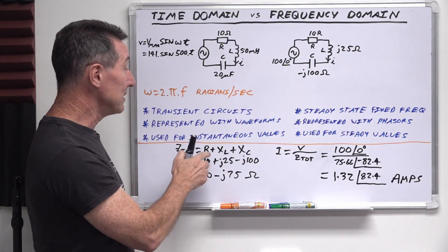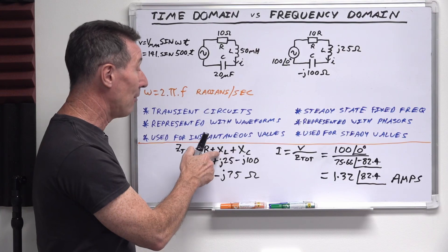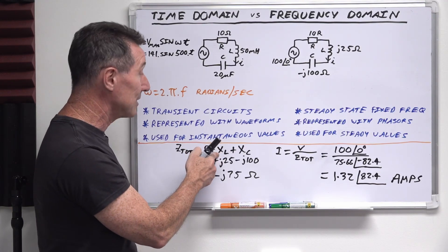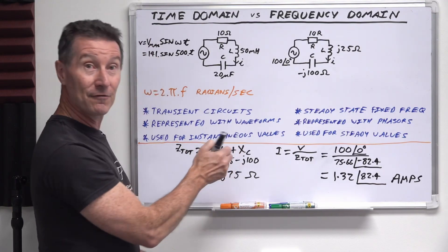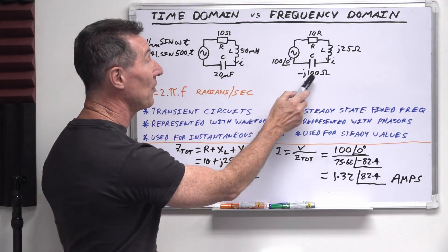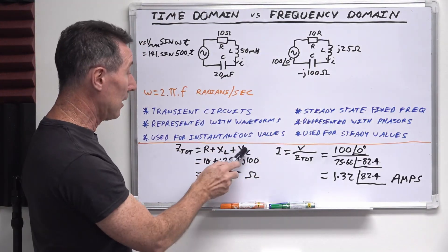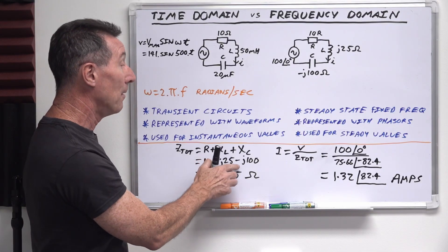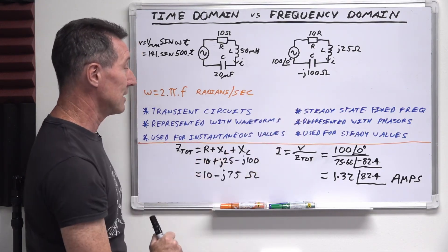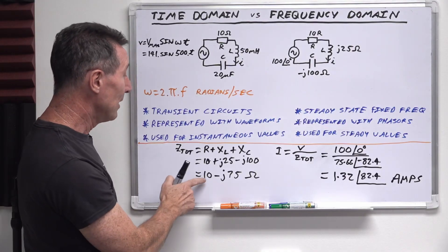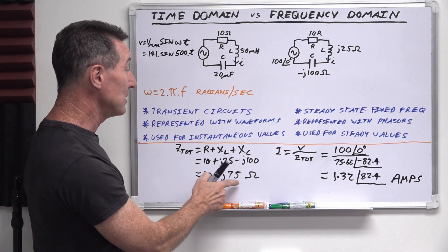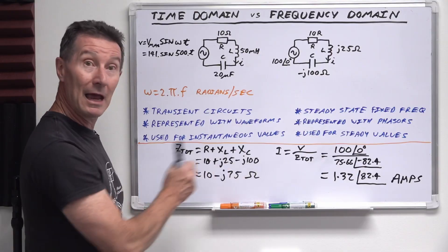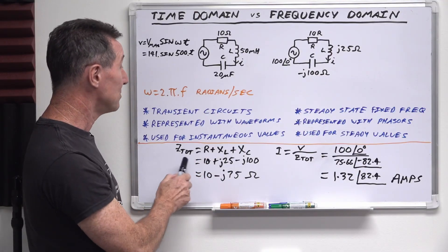So you just add them up. So our total impedance is our resistance plus our inductive reactance plus our capacitive reactance, XC. And we've got them in, conveniently, rectangular form, so we just add them up. 10 plus J25 minus J100, because there's a minus in there because it's a capacitor. So that's 10 minus J75, and the unit of impedance is in ohms.